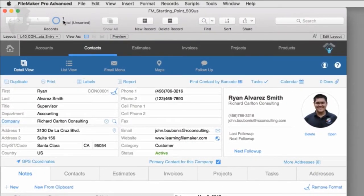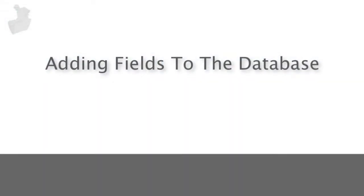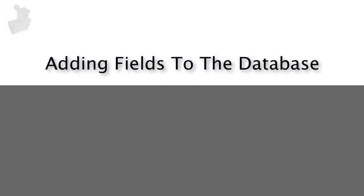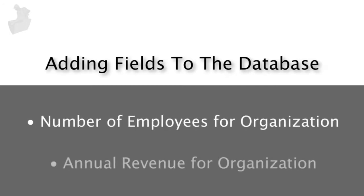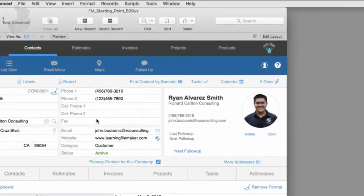Now that we have our disposable copy of FM Starting Point, we want to add two fields. The fields are going to be the number of employees for the organization and also the annual revenue for the organization. We haven't talked too much about the structure of the database except back early on when we talked about it in kind of broad strokes, but now is as good a time as any.